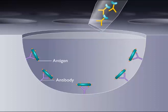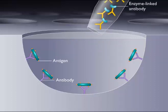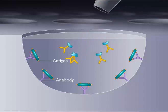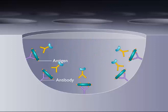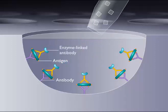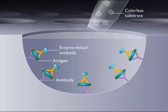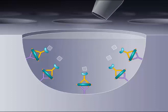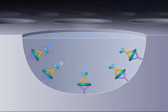Next, an enzyme-linked antibody that can react with the antigen is added. If antigen is present in the well, the enzyme-linked antibody binds to it and is retained. The colorless substrate for the enzyme is then added. Development of color indicates the presence of the antigen.